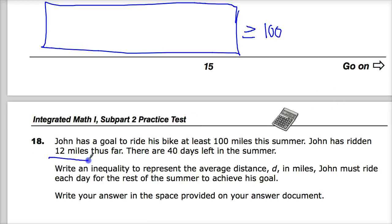John has ridden 12 miles already, so 12 miles are important here. And there are 40 days left in summer. Write an inequality, which we already did, so check there. Look at us thinking ahead.